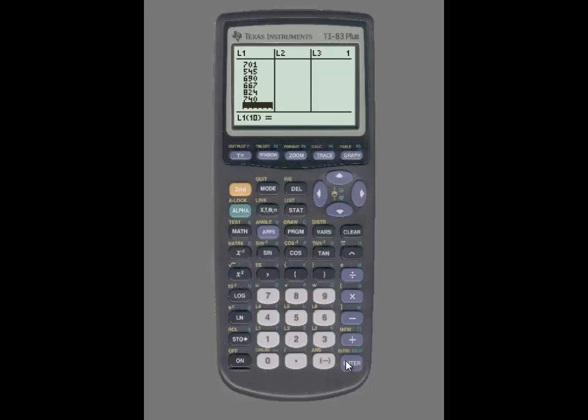In order to access the histogram as well as the box plot, you're going to press the second key and then select the Y= button so you can access STAT PLOT. You'll want to then turn the plot on, so I'll select number one and turn the plot on by simply pressing Enter on the On function.